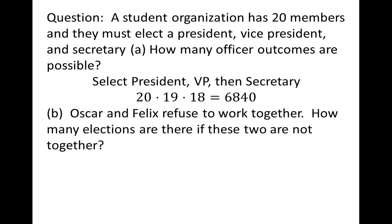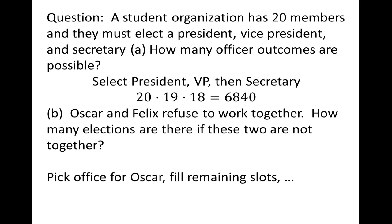Let's focus on filling the offices when Oscar holds one of them. We pick an office for Oscar — three choices. Then we fill the remaining two slots from highest to lowest position. Felix cannot fill any remaining office, so there are 18 choices for the highest remaining office and 17 for the last. Similarly, when Felix holds an office: three options for Felix's office, then 18 choices for the highest remaining position, and 17 for the remaining office. When neither Oscar nor Felix holds office, there are 18 choices for president, 17 for vice president, and 16 for secretary.